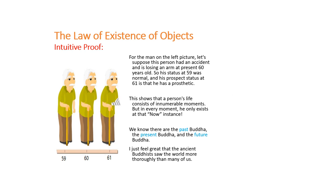Intuitive proof. For the man on the left picture, let's suppose this person had an accident and is losing an arm at present 60 years old. So his status at 59 was normal, and his prospective status at 61 is that he has a prosthetic. This shows that man's life consists of innumerable moments, but in every moment, he only exists at that now instance. We know there are the past Buddha, the present Buddha, and the future Buddha. I just feel glad that the ancient Buddha has saw the world more thoroughly than many of us.